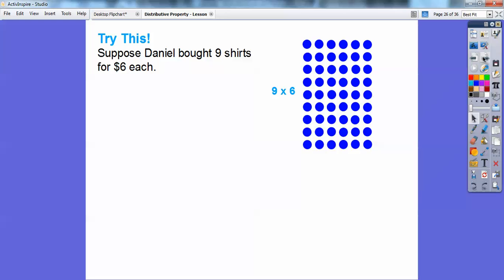Here's another one. Suppose Daniel bought 9 shirts, and since he bought more shirts, they were only six dollars each. So he bought 9 shirts at $6 each. Here's nine rows of six. We can break apart this 9 by 6 into two smaller arrays for facts that we already know.